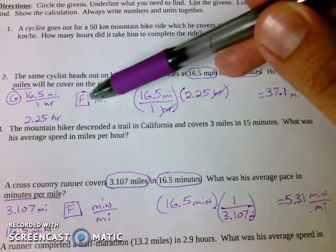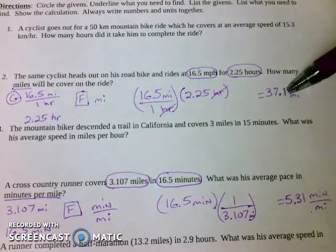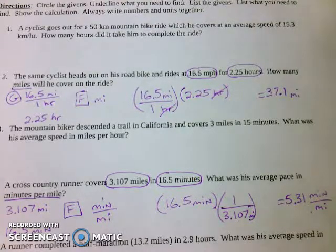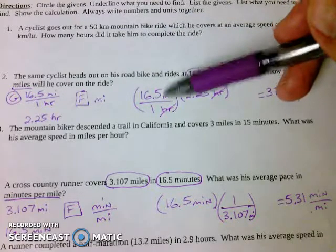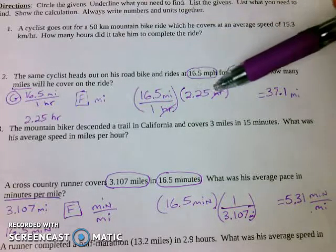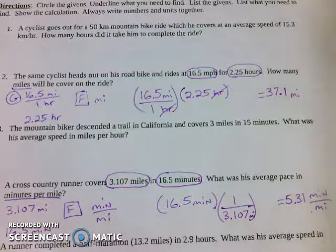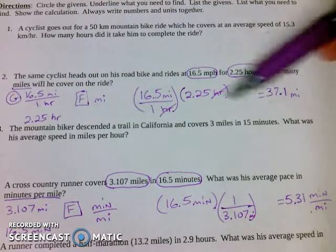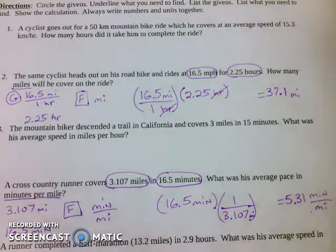And then, list what you're trying to find. Set up the problem. Show your answer. Numbers and units. Always put numbers and units. Don't just write 16.5 over 1, 2.25. If you do that, you're really leaving off information. It's not the correct way to do it. So do these and get your answers. Good luck.